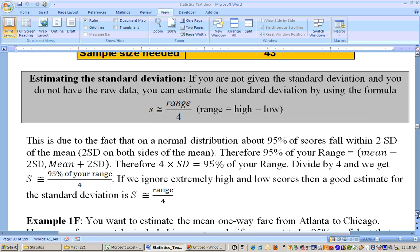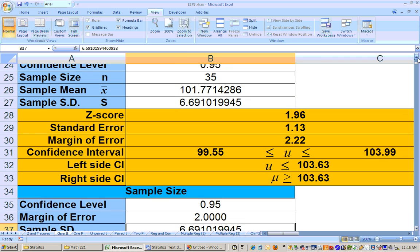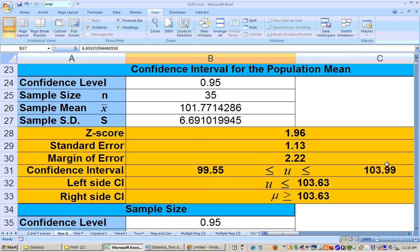Now if you don't have your sample standard deviation, like the last problem, we had an estimate for the standard deviation. We had the sample standard deviation that we used right here. And that's because we were given it, or we were given the raw data to use.